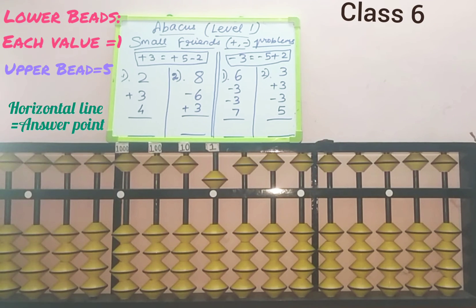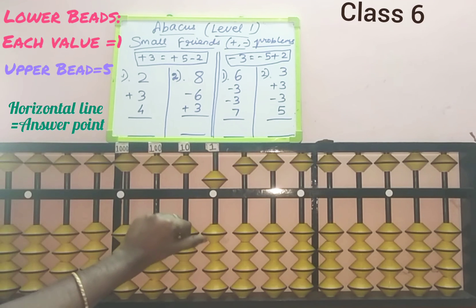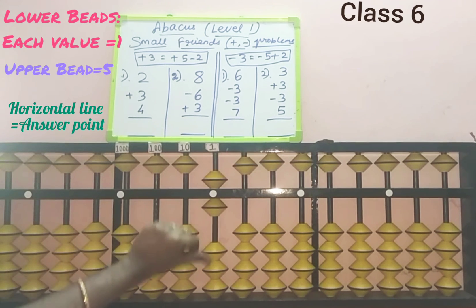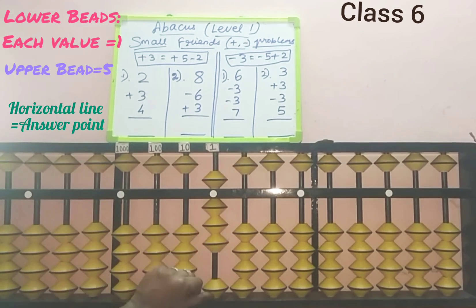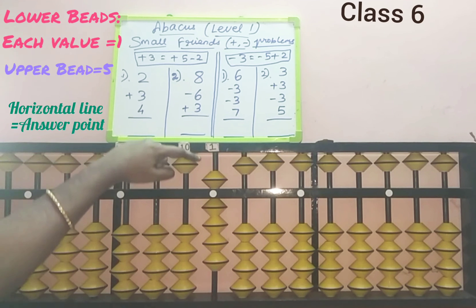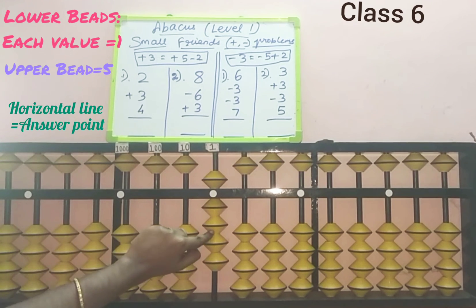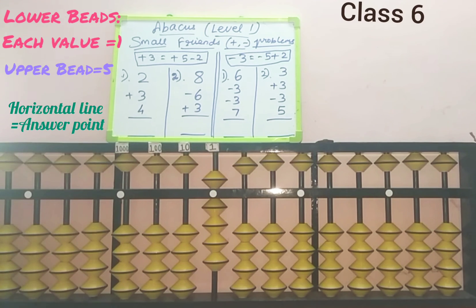Next, third row: add 4. We need to add 4 in the ones slot. Here 4 beads are available so we can add 4 directly — 1, 2, 3, 4. Now check the answer: count the values from the upper part. Its value is 5, 6, 7, 8, 9. Nine is the answer for the first sum. Clear all the values.